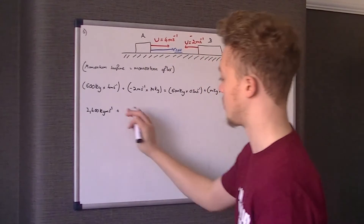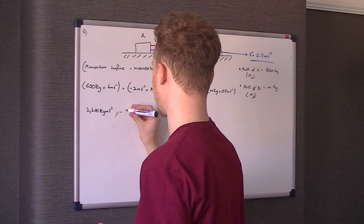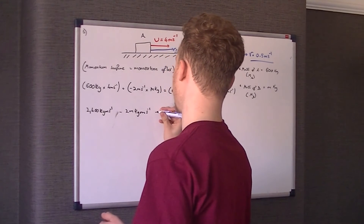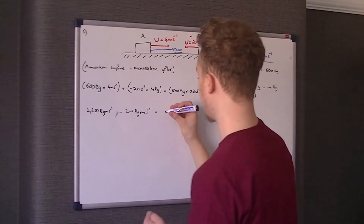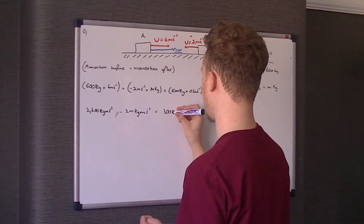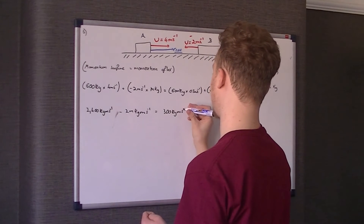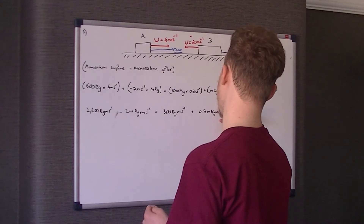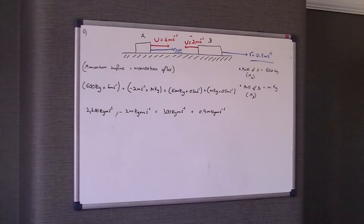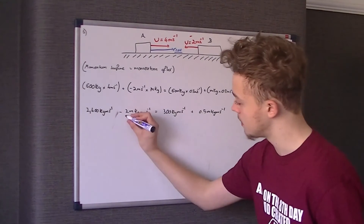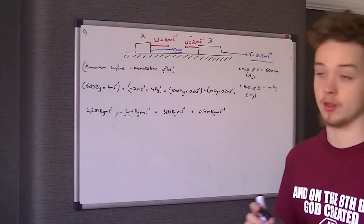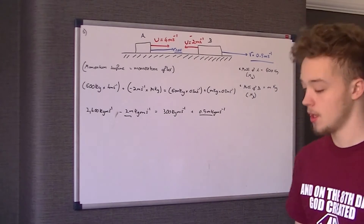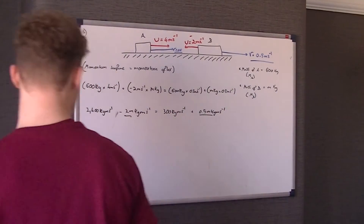And then I'm just going to simplify this next bit to minus 2M kilogram metres per second. That is equal to 600 times 0.5, which is 300 kilogram metres per second, plus 0.5M kilogram metres per second. It's key to distinguish that this is 2M kilogram metres per second and this is 0.5M kilogram metres per second.